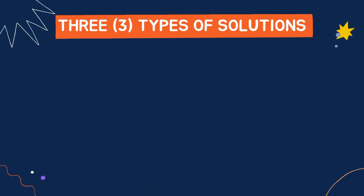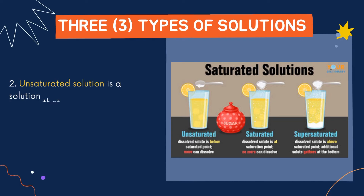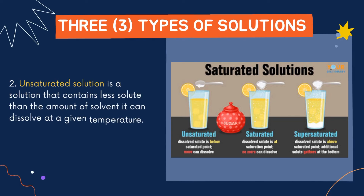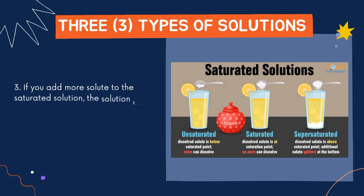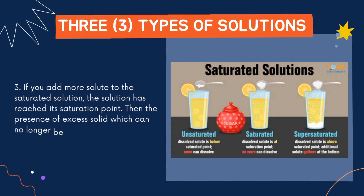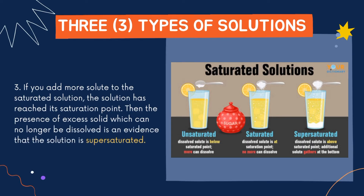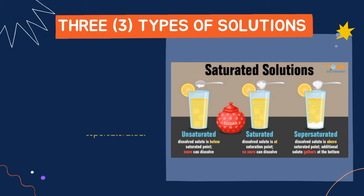An unsaturated solution is a solution that contains less solute than the amount the solvent can dissolve at a given temperature. On the other hand, if you add more solute to a saturated solution that has already reached its saturation point, the presence of excess solid that can no longer be dissolved is evidence that the solution is supersaturated.